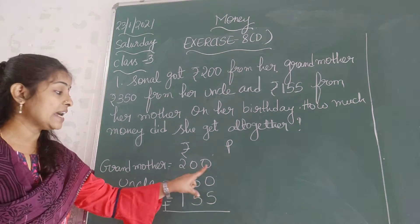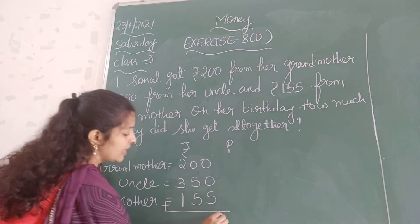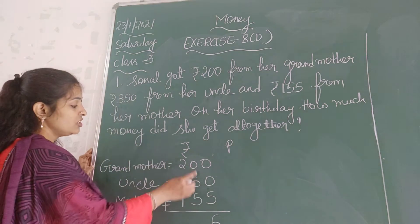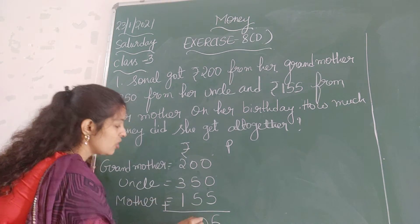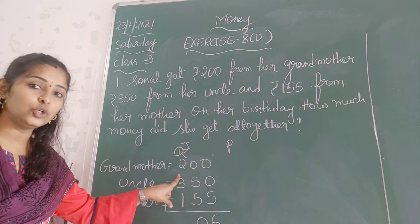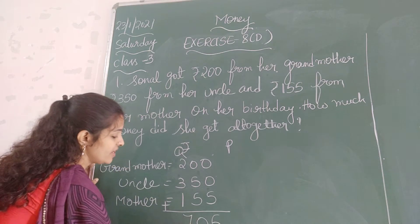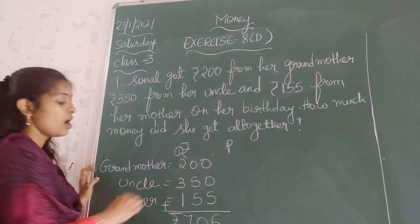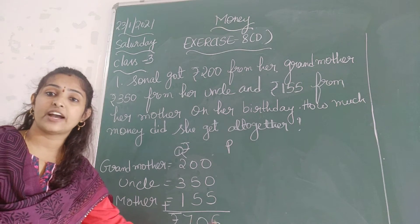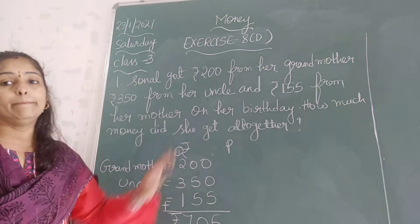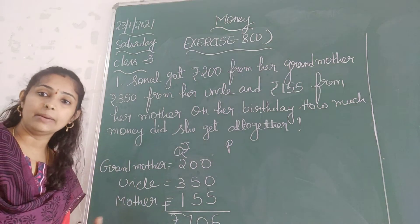Now I need to add all the money. 0 plus 0 is 0. 0 plus 5 is 5. 5 plus 5 is 10, so write 0 and carry 1. 1 plus 2 is 3. 3 plus 3 is 6. 6 plus 1 is 7. So the total money Sonan got is rupees 705, received on her birthday from her grandmother, her uncle, and her mother.